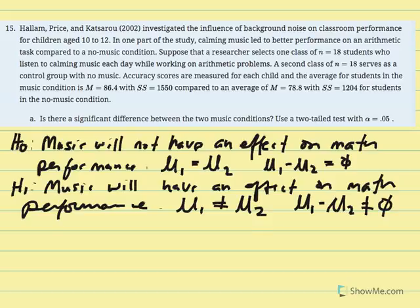The research hypothesis says music will have an effect on math performance, and therefore population 1 is not equal to population 2 — those who listen to music differ from those who do not. Or: mu1 minus mu2 is not equal to zero. Even though results suggested better performance, we follow the instructions and conduct a two-tailed test.